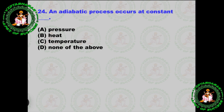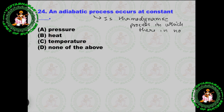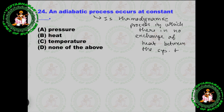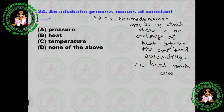Next question: What is an adiabatic process? An adiabatic process is a thermodynamic process in which there is no exchange of heat between the system and the surroundings. In other words, heat remains constant — there is no exchange of heat with the environment.